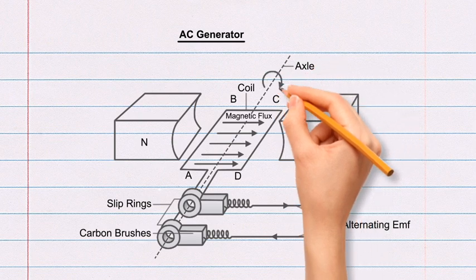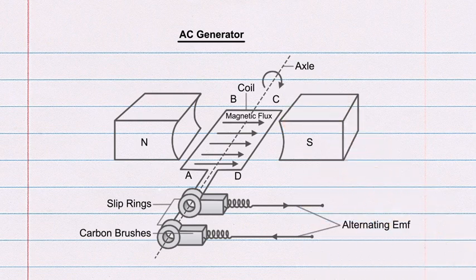Draw a circular rightward arrow at the starting of the dotted line which represents coil rotation in clockwise direction. This completes the drawing of AC generator diagram.